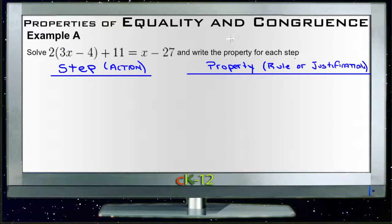This is also called 'justify each step.' So the first thing we're going to do is distribute, so we have our 2 times (3x - 4).